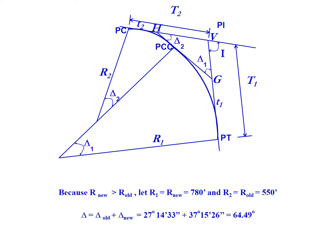The new curve has a larger radius, so we're going to let that new curve be R1. R1 is going to be 780 feet and R2 is going to be 550 feet. We need to make sure all the subscripts of 1 go with that larger radius and the subscripts 2 go with the smaller radius curve.